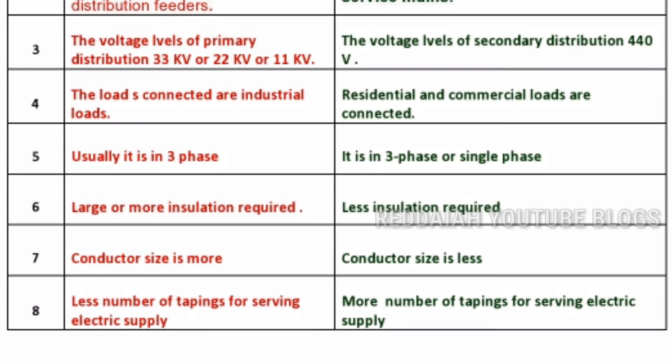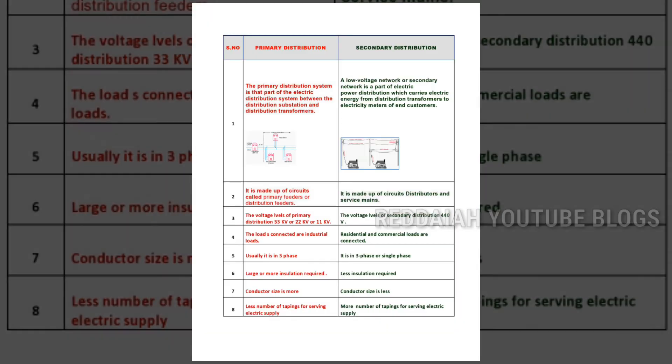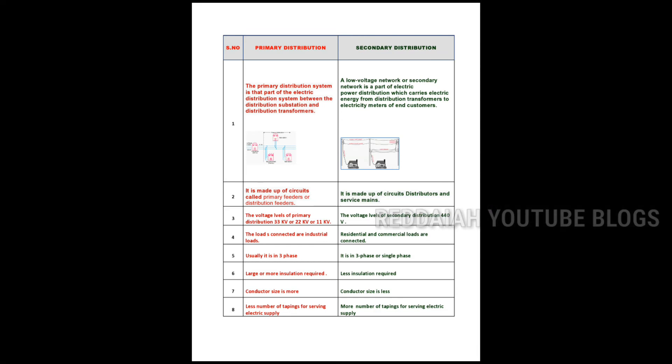This is the comparison between the primary versus secondary distribution system. One point to note is that the cost of the primary distribution system is more because it depends on the length of the line. The secondary distribution cost is less because power comes to the house from a nearby pole or nearby distributor.